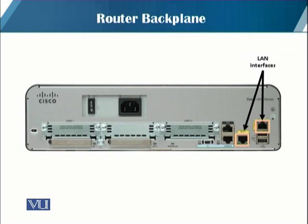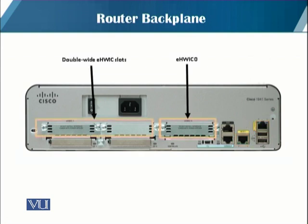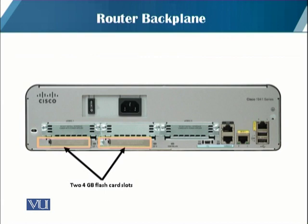On the back of the router we also have LAN interfaces — gigabit Ethernet interfaces for LAN access. A typical Cisco 1941 router has two such ports. There are also two slots for enhanced high-speed WAN interface cards (EHWICs), which provide modularity and flexibility by supporting different interface modules including serial, DSL, switch ports, and wireless modules. Additionally, there are two four-gigabyte flash card slots used to expand the storage capacity of the router. This is the typical backplane of a Cisco 1941 router.